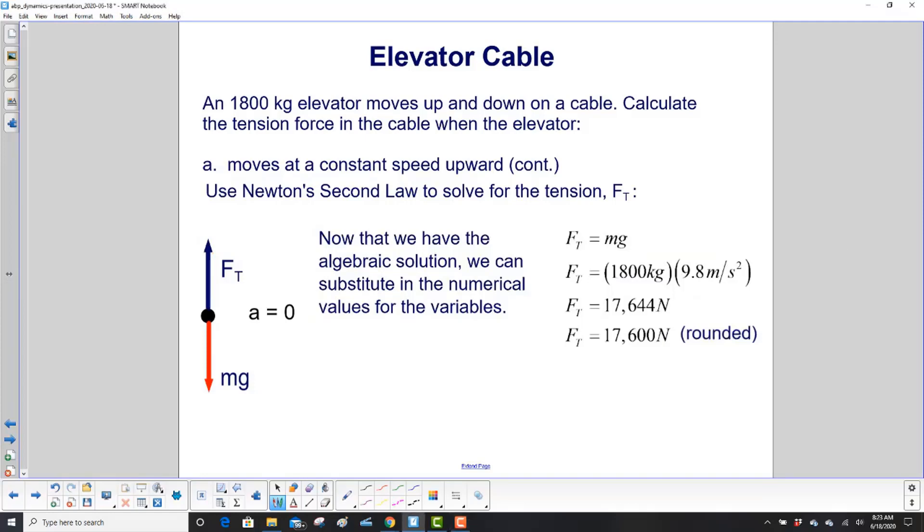Now that we have the algebraic solution, we can substitute in the numerical values. At this level of science, we want you to know the right equations and concepts and be able to solve things. If you get all the way to this point and you have a good free body diagram, you've got most of the points. Then you put the numbers in. If you just make a mistake with the calculator, we know you know the physics.